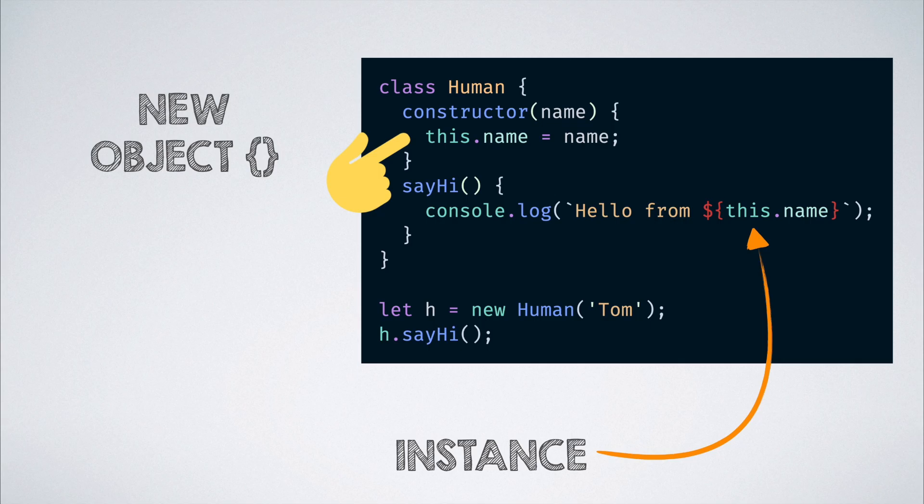For example, here we see that the name property is set on the new object that gets created when the constructor is invoked. And when we call the sayHi function on it, it is printed back due to the value of the this keyword being set to the newly instantiated person object inside of the method due to a rule that we discussed earlier.